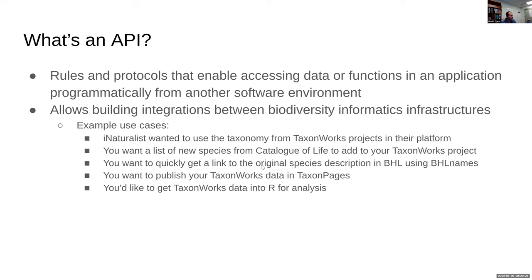If you wanted to get a list of new species from Catalog of Life to add into your TaxonWorks project — since PLAZI is in Checklist Bank — we could potentially develop a task to allow that. Similarly, we could integrate BHL for original species descriptions, and TaxonPages already uses the TaxonWorks API to publish data. You can also pull data into R using the R-TaxonWorks wrapper.